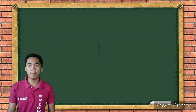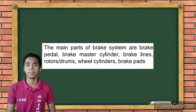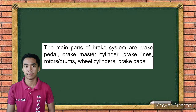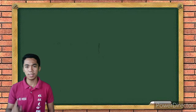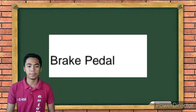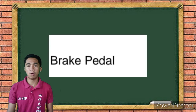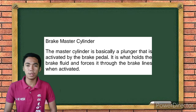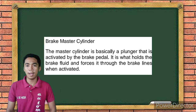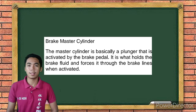Who would like to read the main parts of the brake system? The main parts of the brake system are brake pedal, brake master cylinder, brake lines, rotors or drums, and wheel cylinders. Let me discuss their functions. First is the brake pedal — it is what you push with your foot to activate the brakes, causing brake fluid to flow through the system to put pressure on the brake pads. Next is the brake master cylinder — it is basically a plunger activated by the brake pedal that holds brake fluid and forces it through the brake lines when activated.